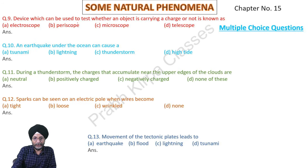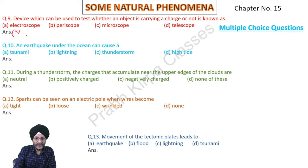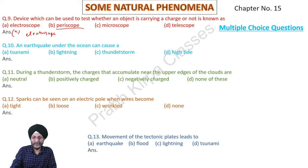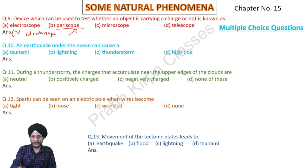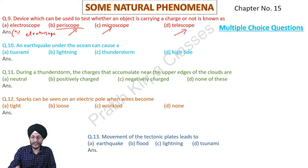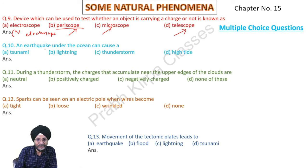A device used to test whether an object is carrying a charge or not is called an electroscope. A periscope is used in submarines to see the surface of the water. A microscope is used to see microorganisms. A telescope is used to see heavenly bodies, the moon, and other objects in the sky.